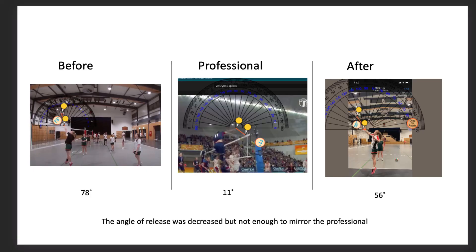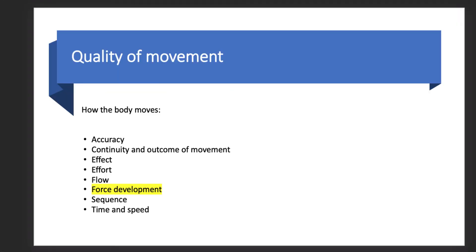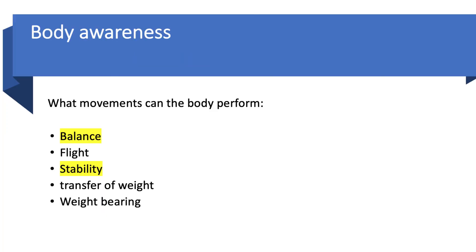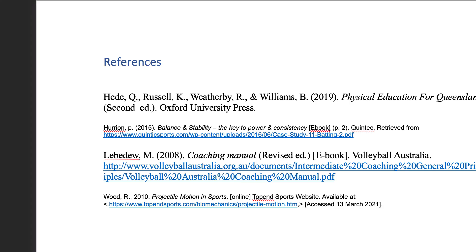A limitation to my biomechanical solution is that I was unable to gain enough vertical height in my jump for my angle of release to be changed enough to match the professional. This is evident in the images shown. However, there was a decrease in the angle of release, making the modification somewhat effective. By analysing my volleyball performance, it was clear that my weak specialised movement sequence was the hit. I have been able to implement a biomechanical modification resulting in my hit becoming more effective, as I have increased my stability by keeping my line of gravity within my base of support. The biomechanical modification has also meant that I have improved the body and movement concepts of quality of movement and the components of force, as I am summating more force in my hit, and the body and movement concepts of body awareness and the components of balance and stability, as my body is more stable after the modification. This means that I have improved in the movement strategy of forcing the opposition to use a free ball or non-attacking return under the principle of play, setting up attack.